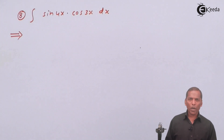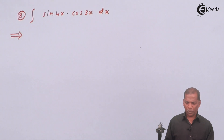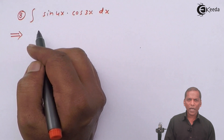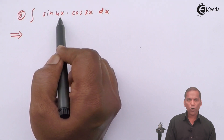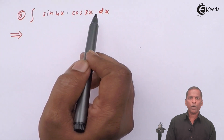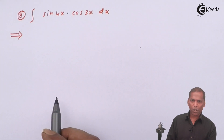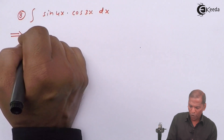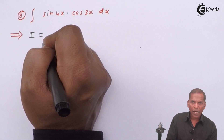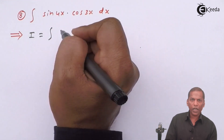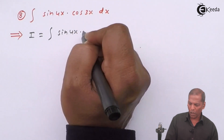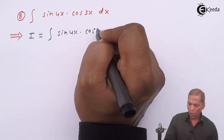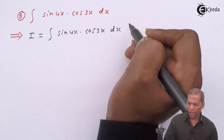Now we see problem number 8, which is based on rules of integration. The problem is: find the integral of sin(4x) into cos(3x) dx. Now let's see the solution. I is equal to integral of sin(4x) into cos(3x) dx.